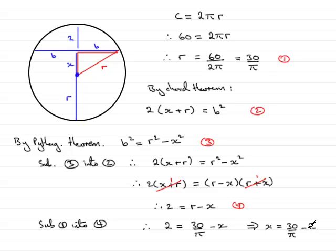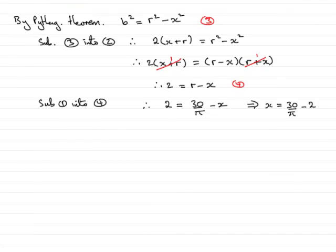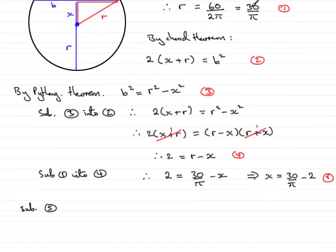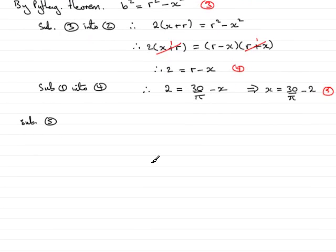So we've got that value now, so my target is to work out the length of the chord, so I need to work out what b is. So how am I going to do that? Well, I can substitute this value along with r back into Pythagoras' theorem, which was equation 3. So if I say now substitute this equation, let's call that number 5, substitute equation 5 and also the value of r, which remember up here was 30 over pi, substitute that into number 3.